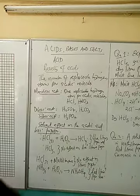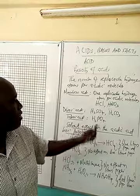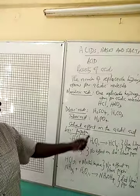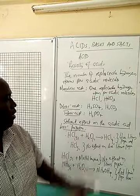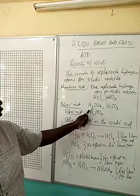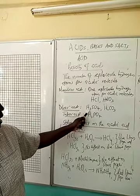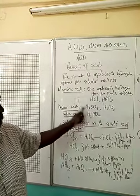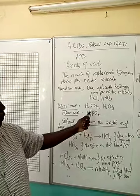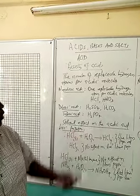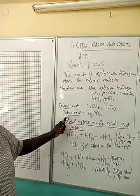Dibasic acids are acids which have got two replaceable hydrogen atoms per acidic molecule. Examples are sulfuric acid and carbonic acid. The two hydrogen atoms will be replaced whenever it reacts with any substance, maybe a metal, thereby producing hydrogen gas. And the sulfate, which is a conjugate of the acid, will react with the metal to produce salt.